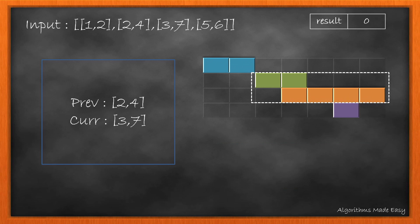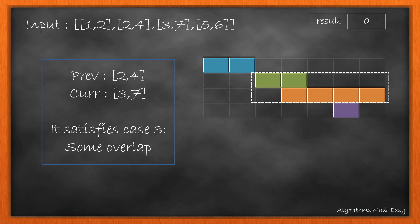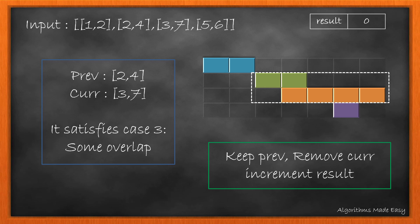Coming to the second and third point. As this satisfies case 3, wherein there is some overlap, we need to follow the greedy approach and keep the previous while removing the current. So, as we are removing a point, we increment the result.